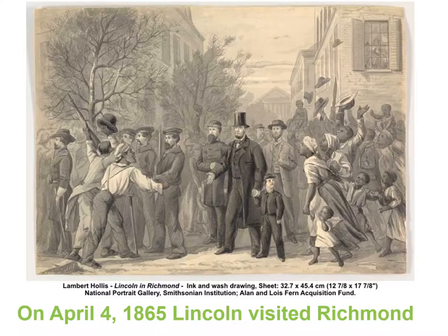Lincoln decided he wanted to go inspect Richmond. All his advisors said don't go, but Lincoln took a train down on April 4th, 1865, and walked around Richmond. Crowds of African Americans greeted him as a messiah and wanted to touch him. In one particularly moving moment, Lincoln told one Freeman, 'Don't kneel to me. You must kneel to God only, and thank him for the liberty you will enjoy hereafter.' But it was a gutsy move on Lincoln's part, because there were obviously Confederates that would have killed him — and indeed, of course, they did later on.